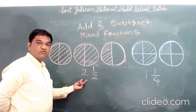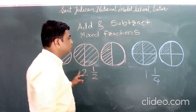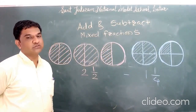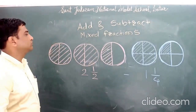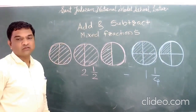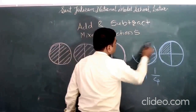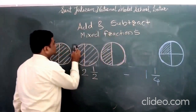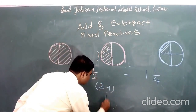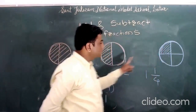So we have two fractions: two whole one-by-two and one whole one-by-four. We want to subtract one whole one-by-four from two whole one-by-two. Subtracting naturally means to remove. So we remove one complete circle from the other complete circle. We delete the first circle from each group, so two minus one gives us one whole remaining.